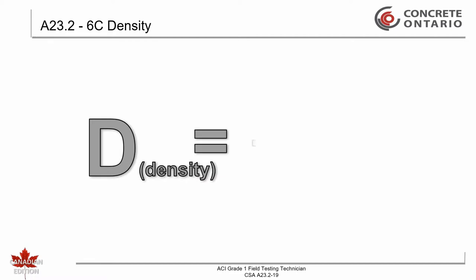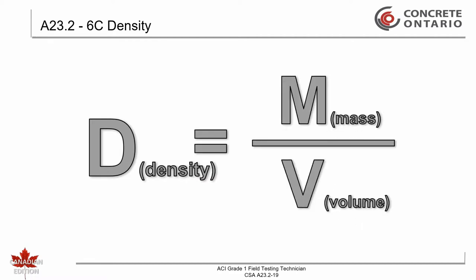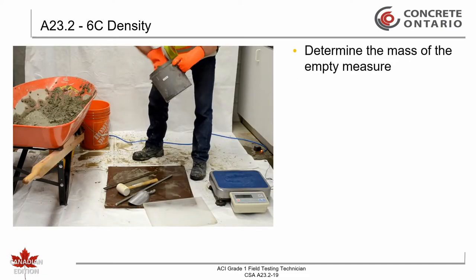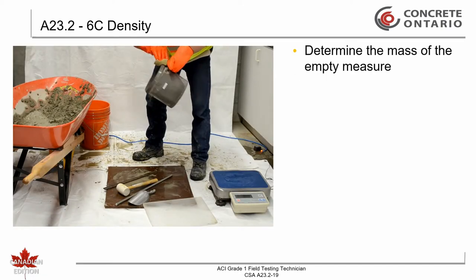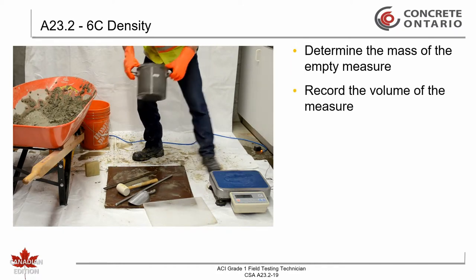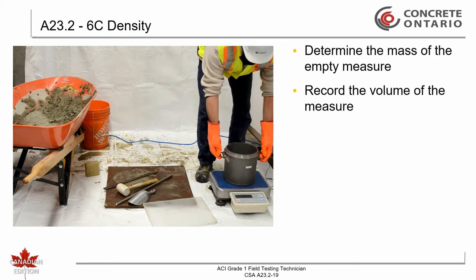Density is defined as the mass of an item divided by the volume it occupies. For this test we require a container of known volume. Clause 7 of CSA A23.2-6C provides the procedures for calibrating the measure; this is not covered under this video. First we determine the mass of the empty measure to the nearest 0.05 kilograms and we record the volume V, or the factor 1 over V, of the measure. This is frequently recorded on the side of the measure.